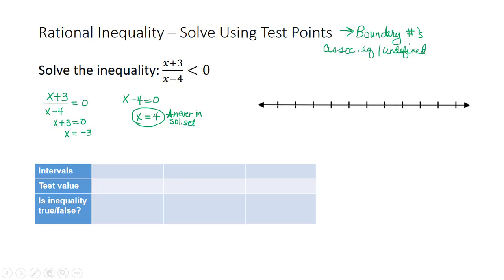So now we're going to place these boundary numbers on our number line. These boundary numbers divide our number line up into three regions, A, B, and C.